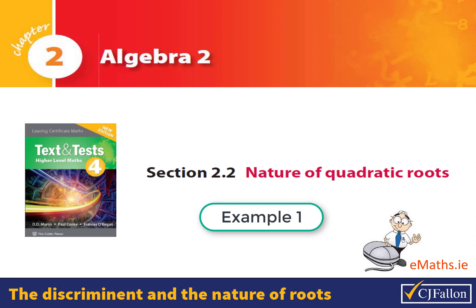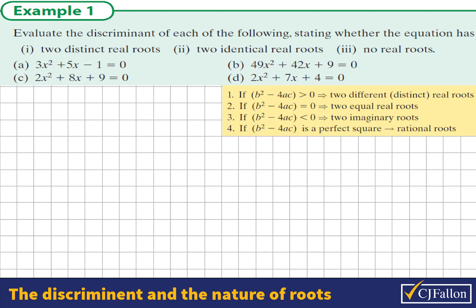The discriminant and the nature of quadratic roots. Evaluate the discriminant in each of the following equations and state what kind of roots the equation has. The discriminant, delta, is equal to b squared minus 4ac. This is the part underneath the square root sign in the quadratic formula.